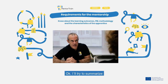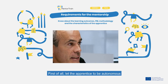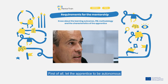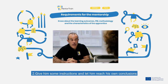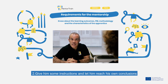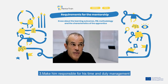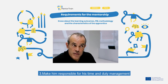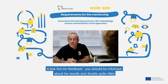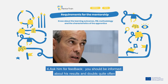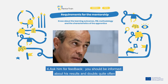Okay, I will try to summarize. First, let the apprentice be autonomous. Second, give him some instructions and let him reach his own conclusions. Third, make him responsible for his time and duty management. Fourth, ask him for feedback — you should be informed about his results and doubts quite often.